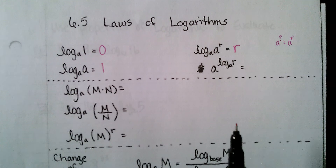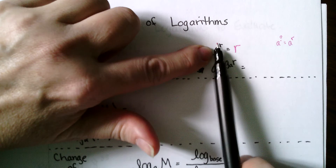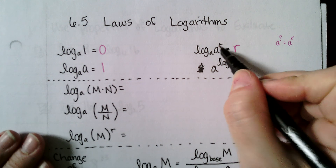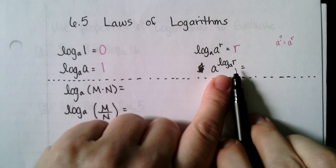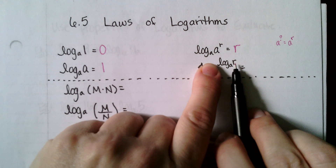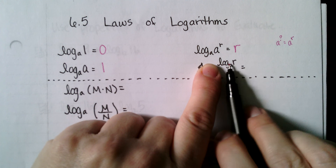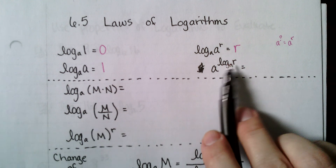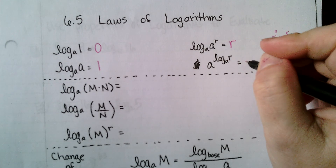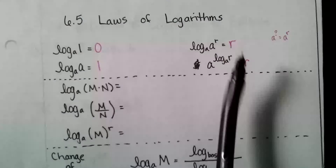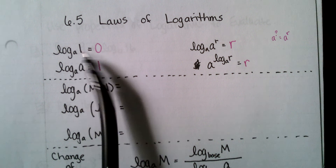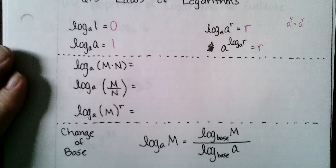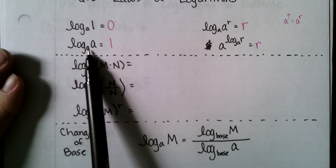Since logs and exponentials are inverse operations, if I exponentiate something and then log it, I'm basically undoing what I just did, so I end up with r. This is the same thing in reverse: first I take log base a of r, then raise that as an exponent — logging then exponentiating undoes each other since they're inverse functions, leaving me with r. So these two are identities, always true no matter what base you're using. That letter a stands for any base.